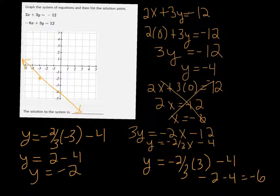So we've got the points 0, negative 4, and negative 3, negative 2.